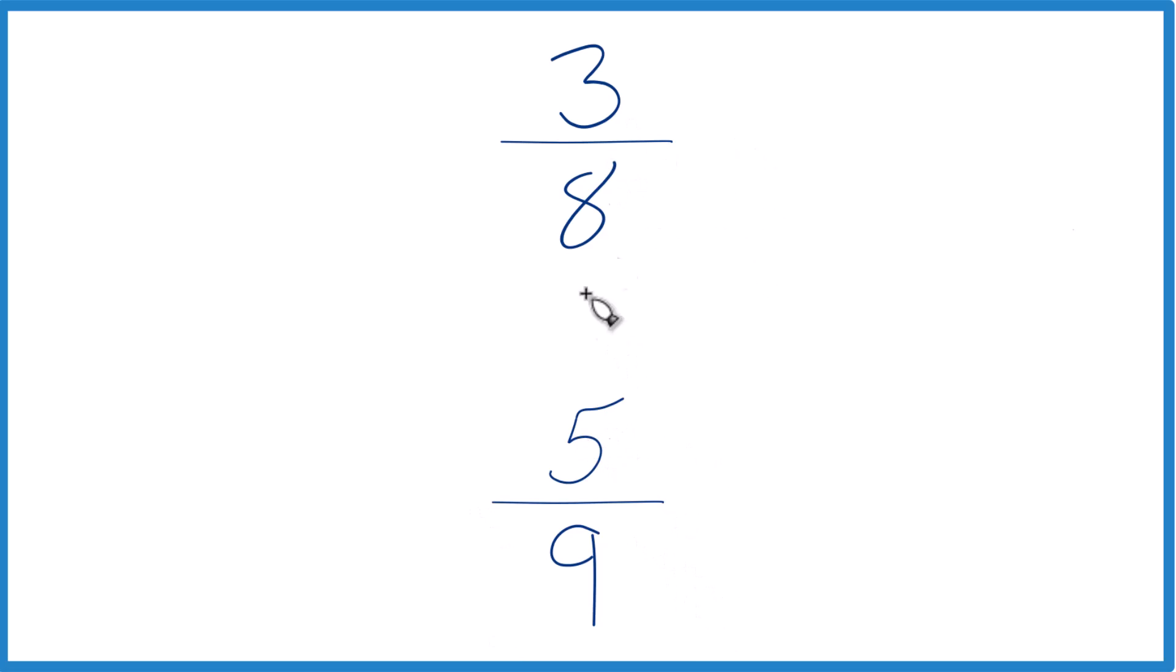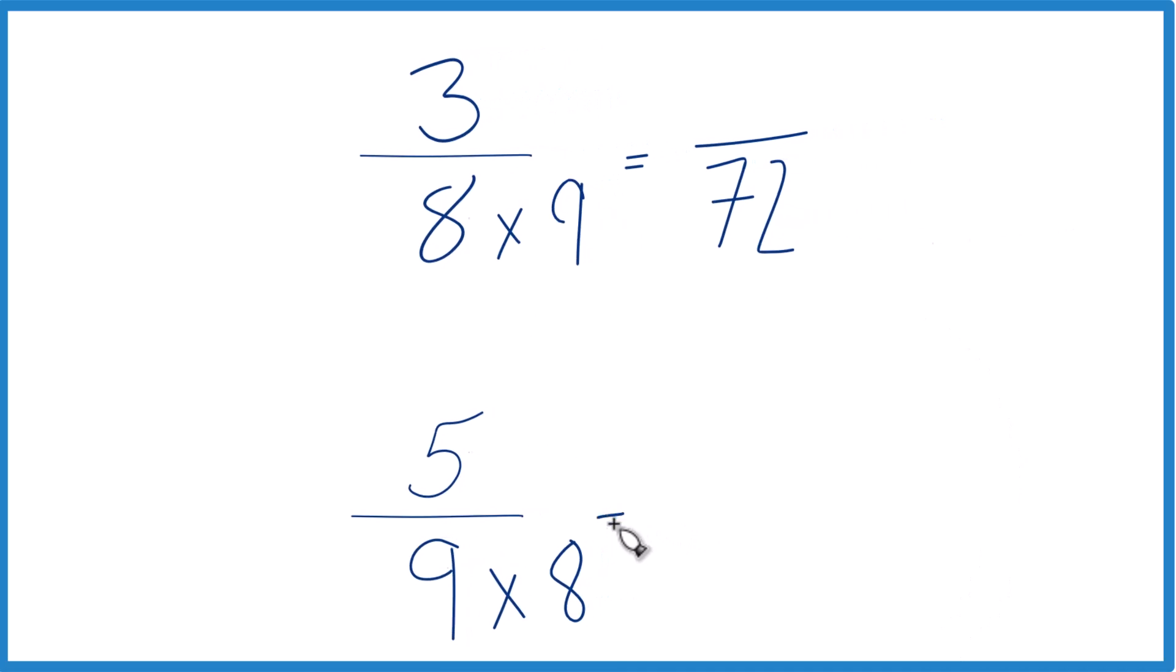We figure out which is greater. So let's just take 8 and then we'll multiply it by 9. So when we do that, we end up with 72. So there's our denominator here. Down here, I'm going to multiply 9 times 8. And that equals 72 as well.